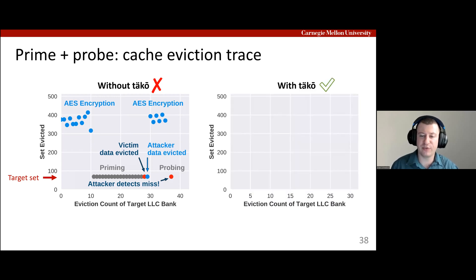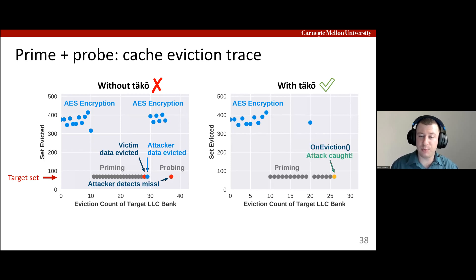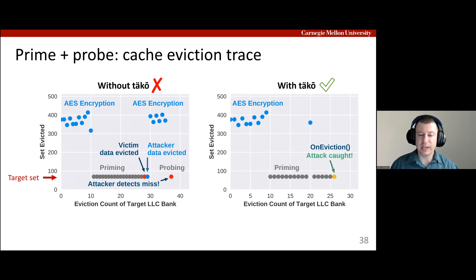Now, let's look at the same cache eviction trace with TACO. Once again, the victim performs an AES encryption. However, this time when the attacker primes the cache set, on-eviction is triggered, detecting the attack before any data can be leaked from probing. This example demonstrates an entirely different class of benefits from the other case studies. Instead of optimizing for performance, this application uses TACO to gain visibility into the cache hierarchy. Such feedback from hardware to software is simply not possible with the traditional memory interface.